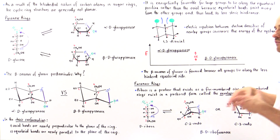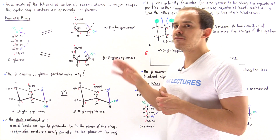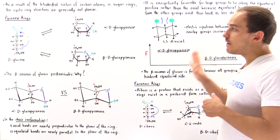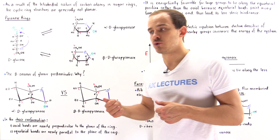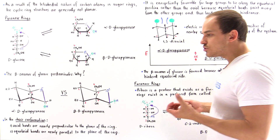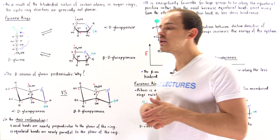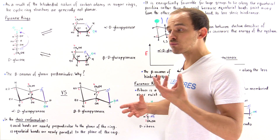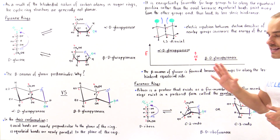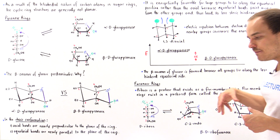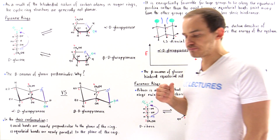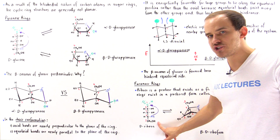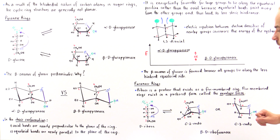We not only have six-membered rings in our body; we also have five-membered rings. Fructose molecules exist as five-membered rings, and so do ribose molecules. Ribose is very important because it's a constituent of nucleic acids — DNA and RNA. Ribose exists as a five-membered ring and is a pentose, meaning it consists of five carbon atoms.